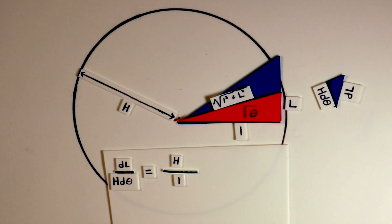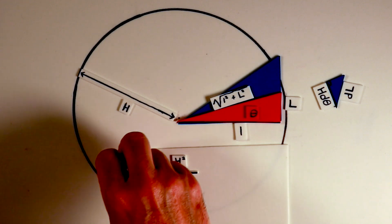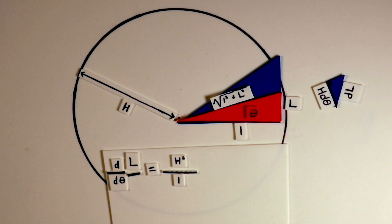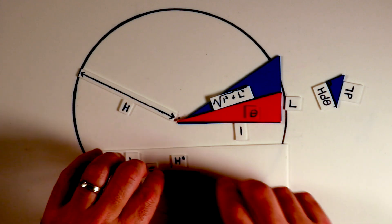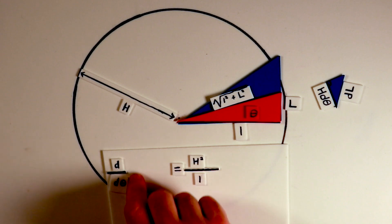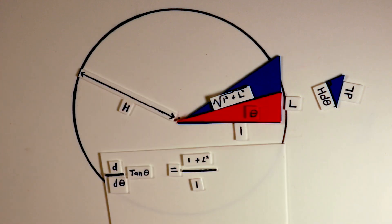Cross multiplying by H, we can solve for the derivative of the tangent. L over 1 is just equal to the tangent. And H squared is equal to 1 plus L squared. But since L over 1 is equal to the tangent of theta, this is just equal to 1 plus the tangent squared of theta.